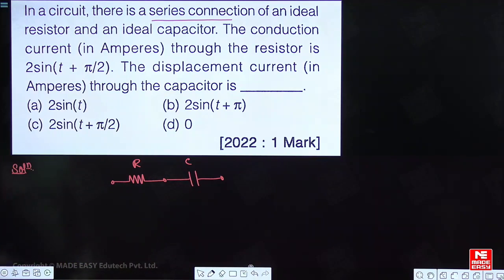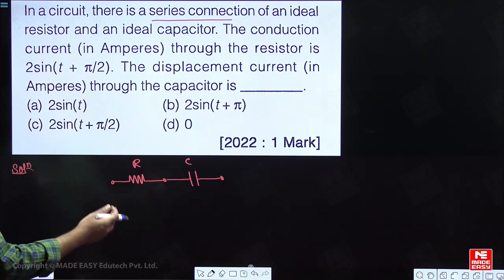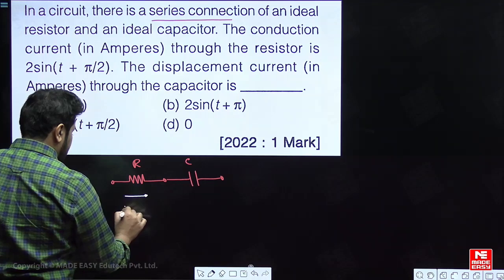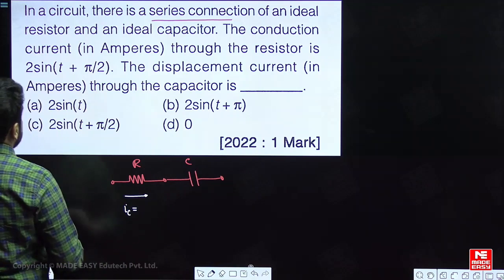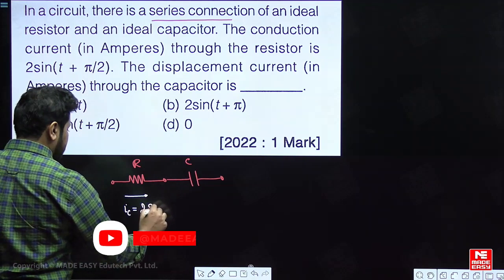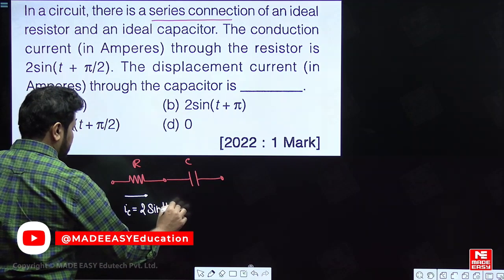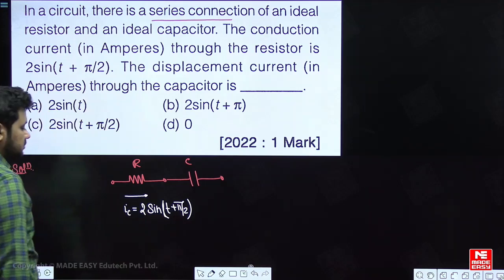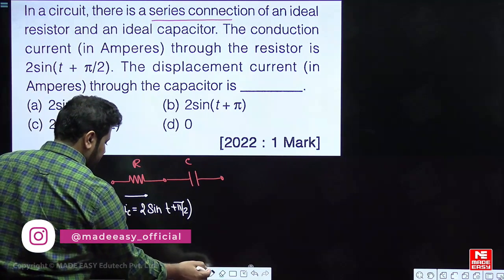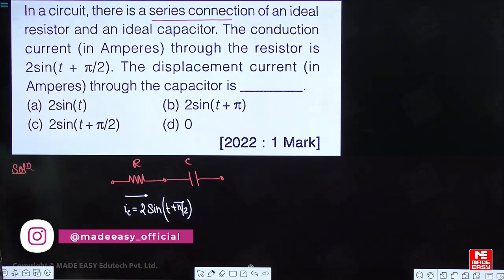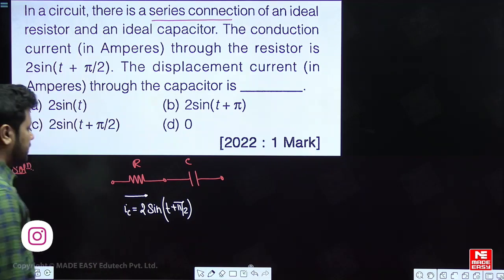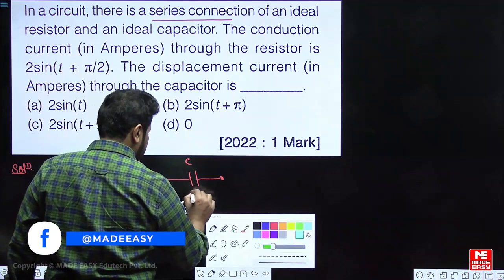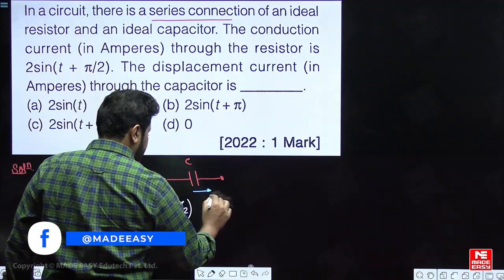Next, what it is saying? The conduction current in amperes through the resistor is given as 2 times sin(t + π/2). They are asking how much will be the displacement current, Id, through the capacitor.